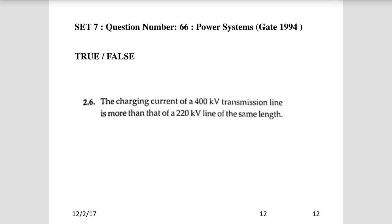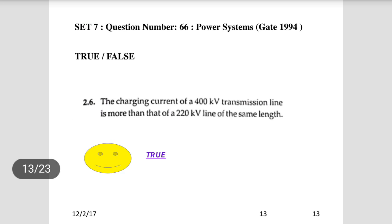Question 6 (from year 1994): The charging current of a 400 KV transmission line is more than that of a 220 KV transmission line of the same length — true or false? Since it is the same length, the capacitance value will be the same. However, charging current increases proportionally with voltage, so this statement is true.